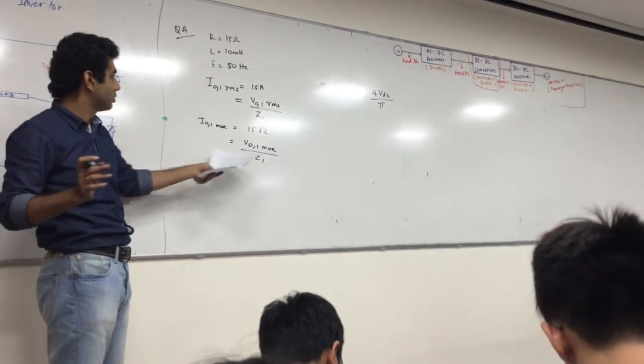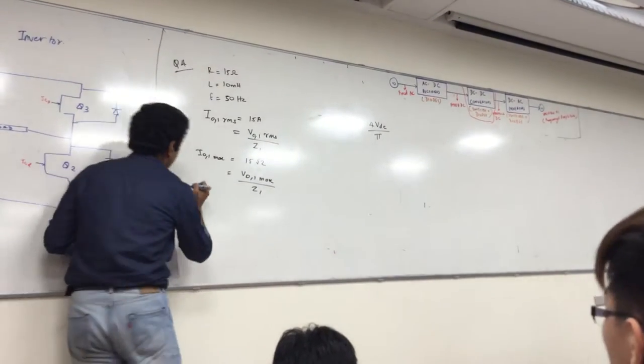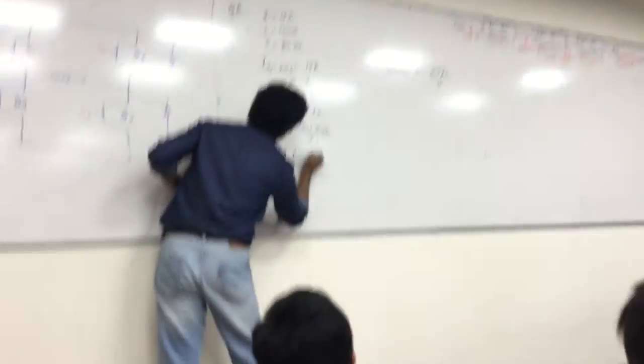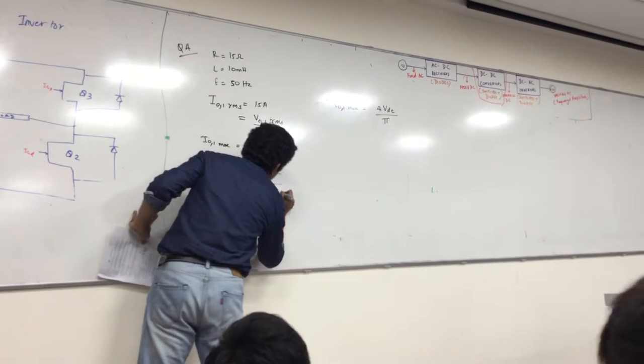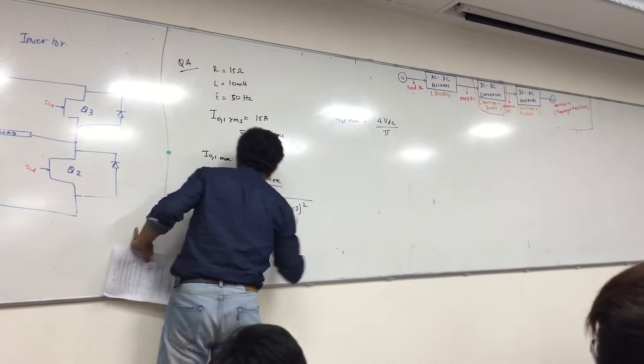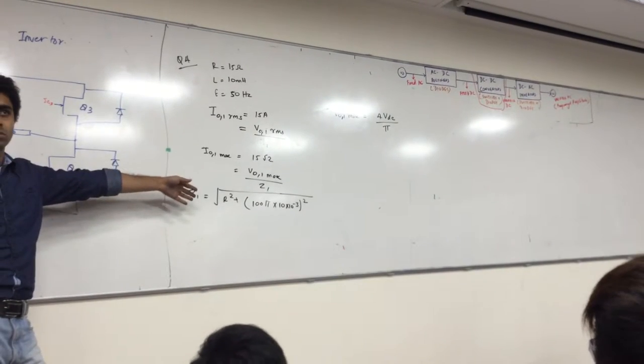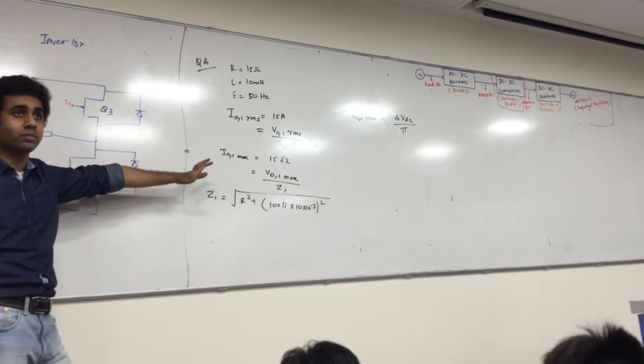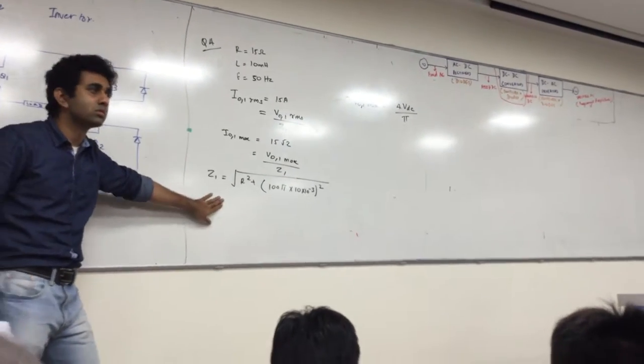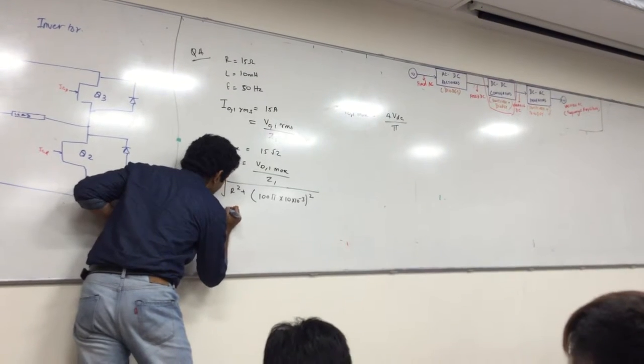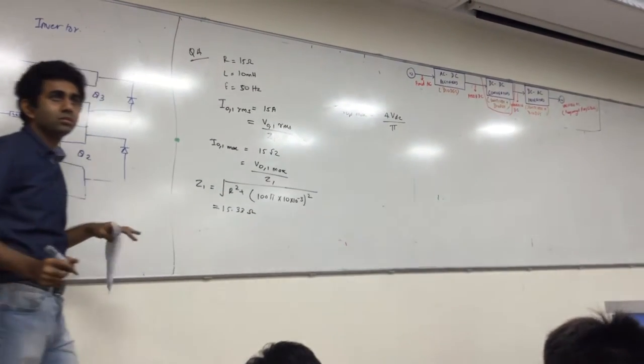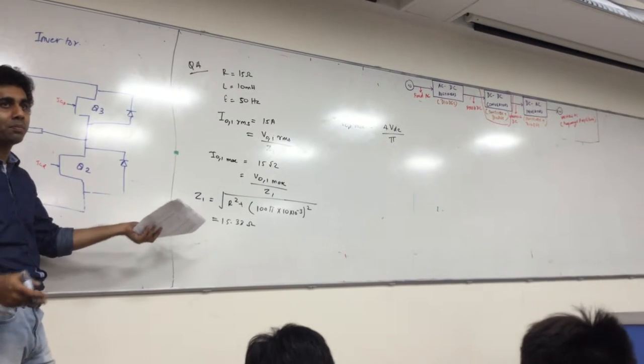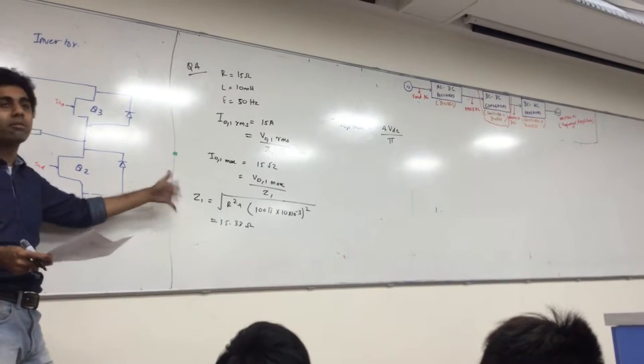So we can find out Z1 here. R squared plus omega L, so it's 10Ω in 2. This is your amplitude, your magnitude of your Z. You are not worried about the angle here, just the magnitude.